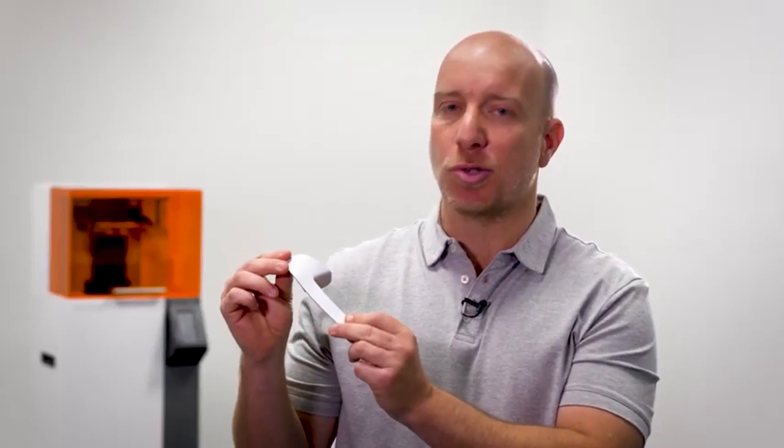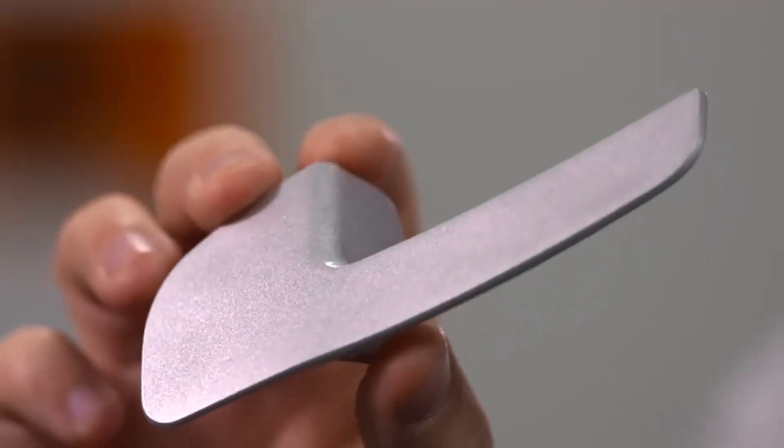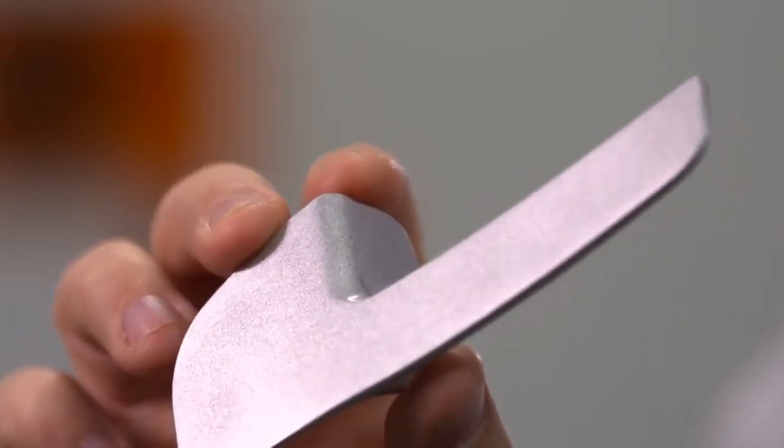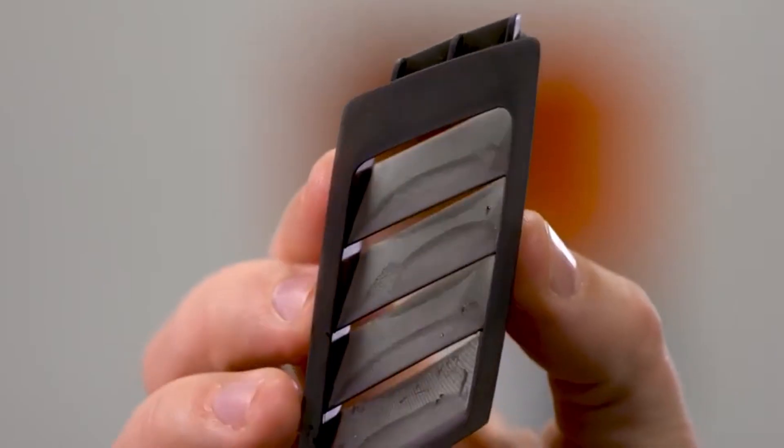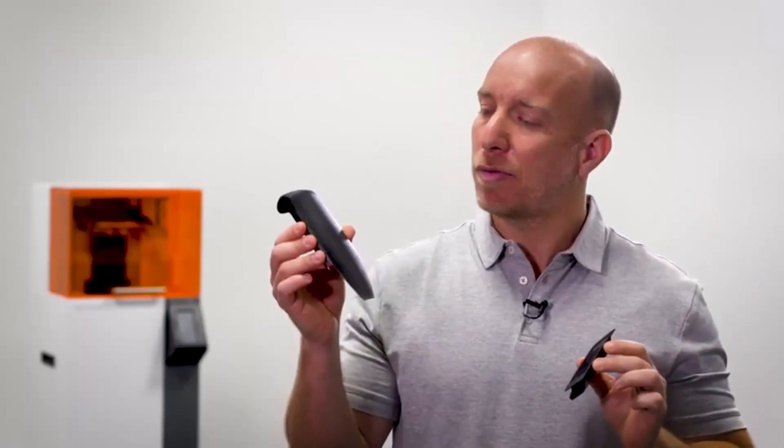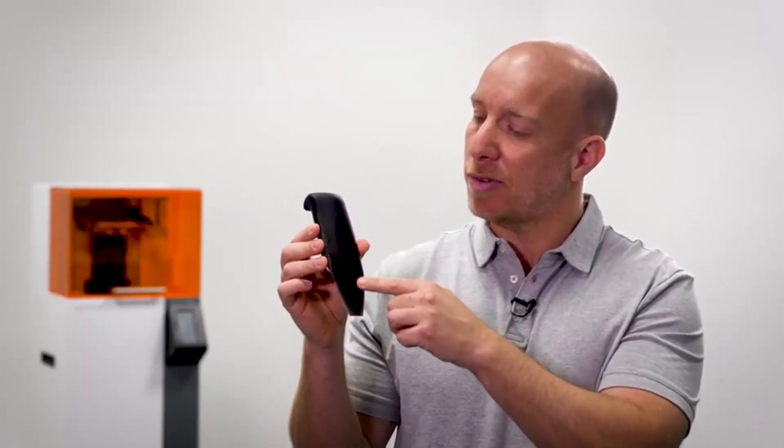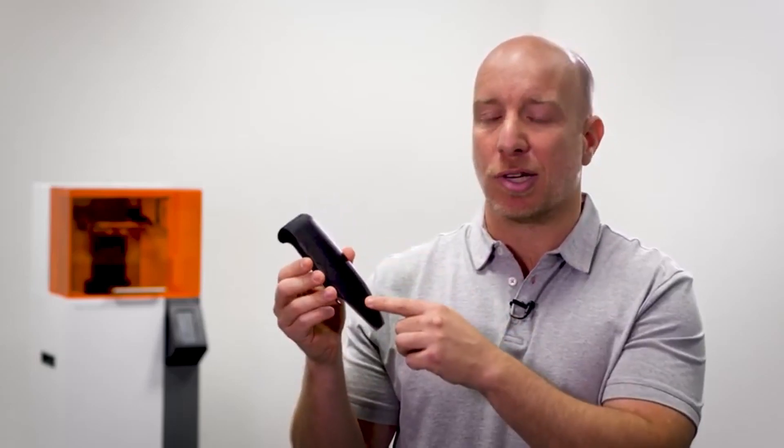Take for example this car door handle prototype printed in under 40 minutes. The exceptional surface quality of this part makes it ideal for painting or plating. Or this automotive air vent and this seat rest featuring curved and textured surfaces to closely match the car's interior.